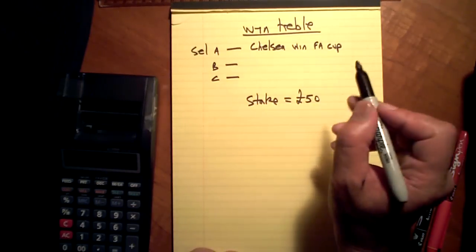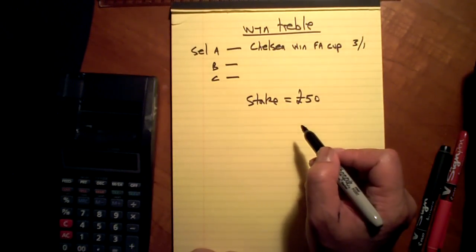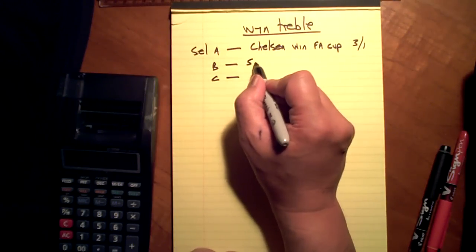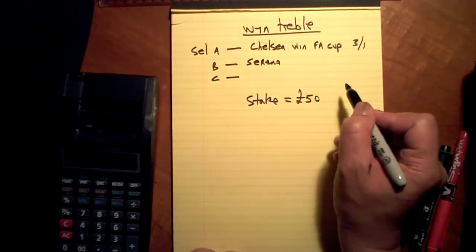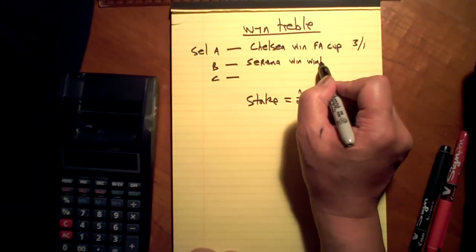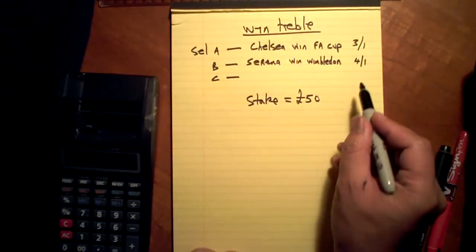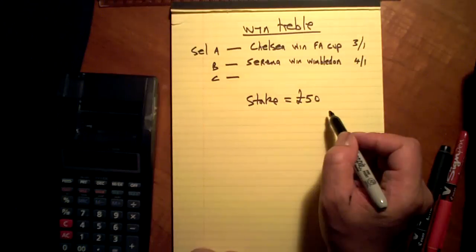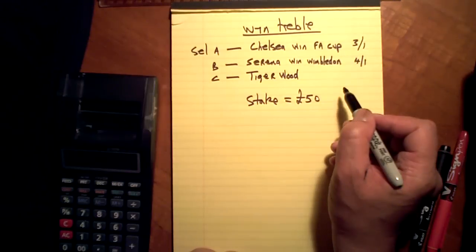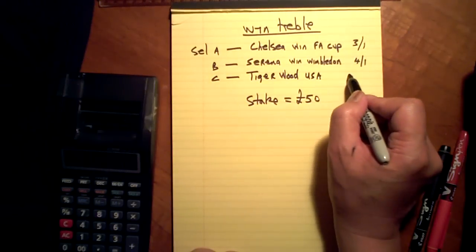Chelsea to win FA Cup. Three to one. My first selection. Serena Williams to win Wimbledon 2011. Four to one. Tiger Woods to win USA Open Golf. Seven to one.